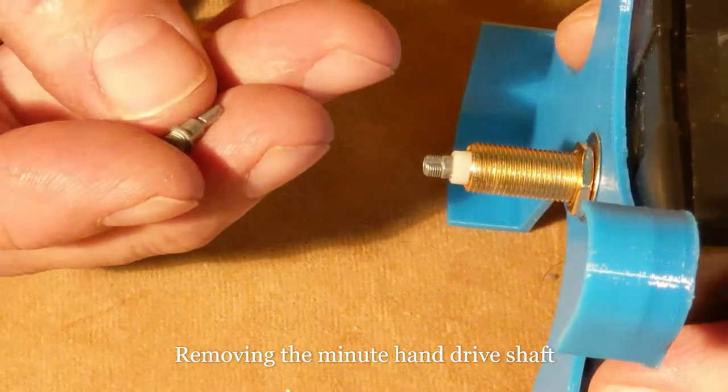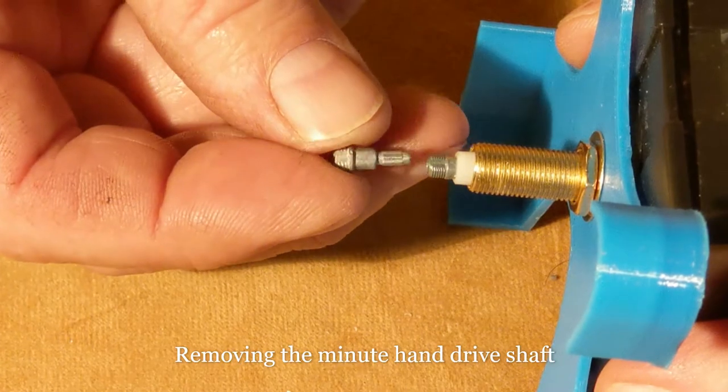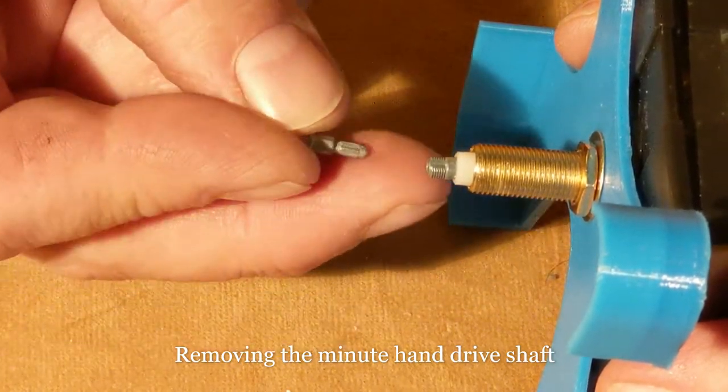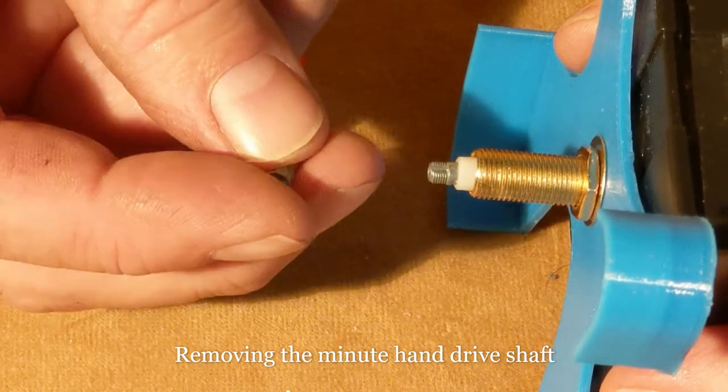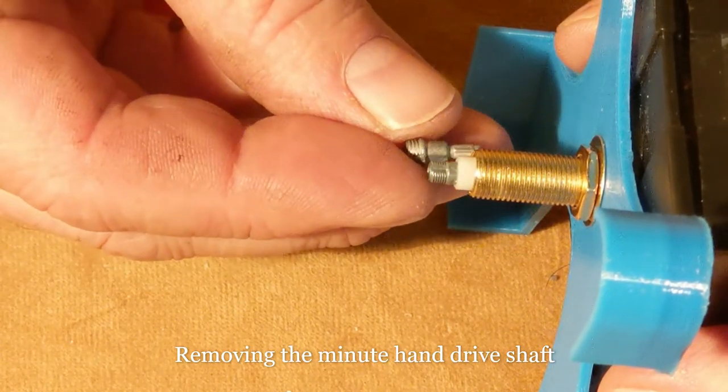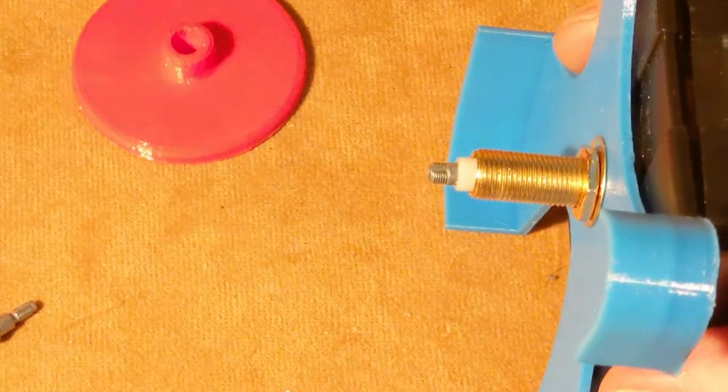So what I've been doing is removing this metal piece. You can see it has some teeth on this end, and on this end it interfaces with the minute hand. It's just actually pushed in place and goes into another plastic shaft that's further down inside.